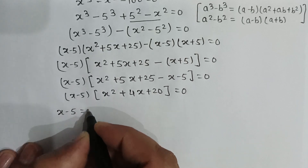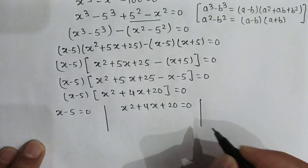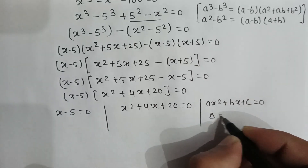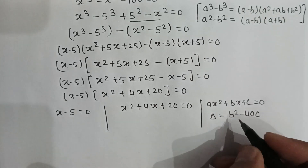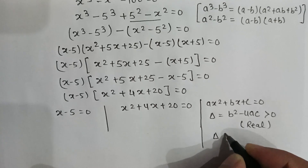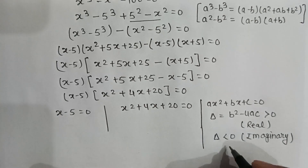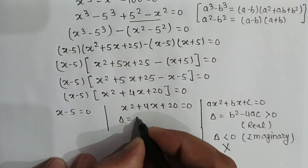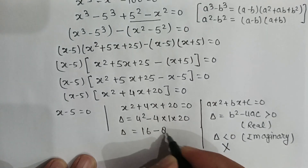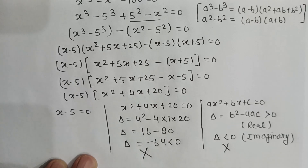So x minus 5 equals 0, or x square plus 4x plus 20 equals 0. For a quadratic equation ax square plus bx plus c equals 0, the discriminant delta equals b square minus 4ac. If delta is greater than 0 the roots are real; if delta is less than 0 the roots are imaginary and we can reject them. Here delta equals 4 square minus 4 times 1 times 20, which is 16 minus 80, giving delta equals minus 64. Since delta is less than 0, we reject those roots.